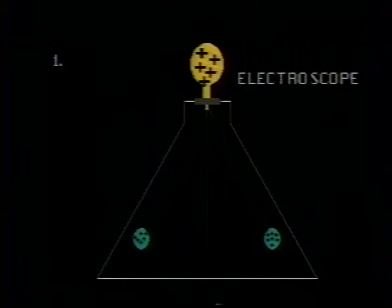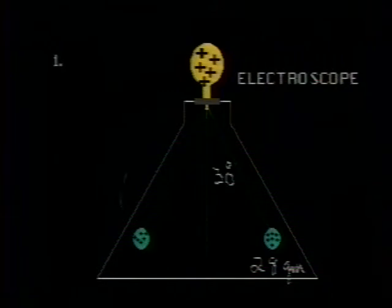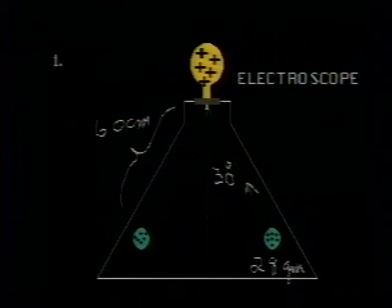We're told that each of the balls has a mass of 28 grams. The angle that the wires make with the vertical is 30 degrees, and that the length of each wire is 60 centimeters. The first question is what is the tension, let's call it T, in each of the wires?